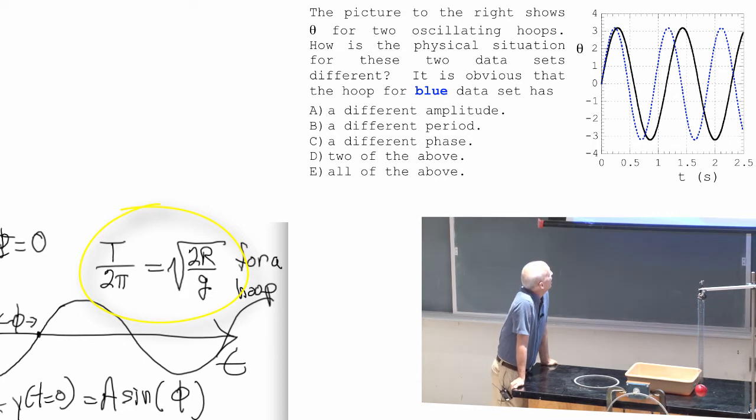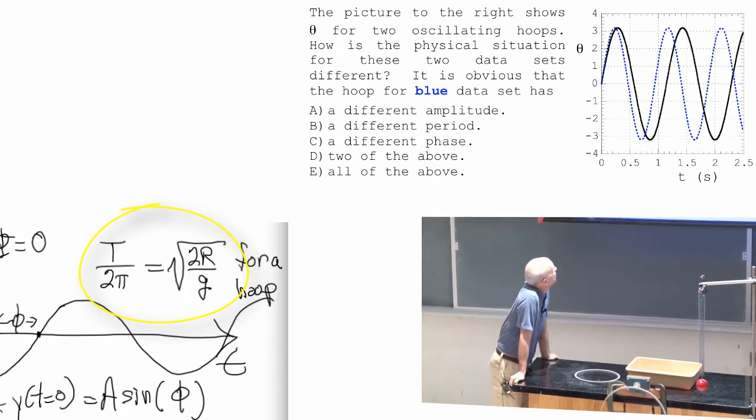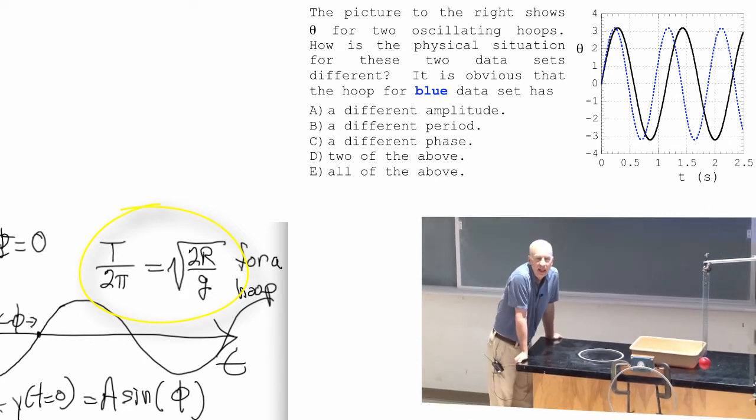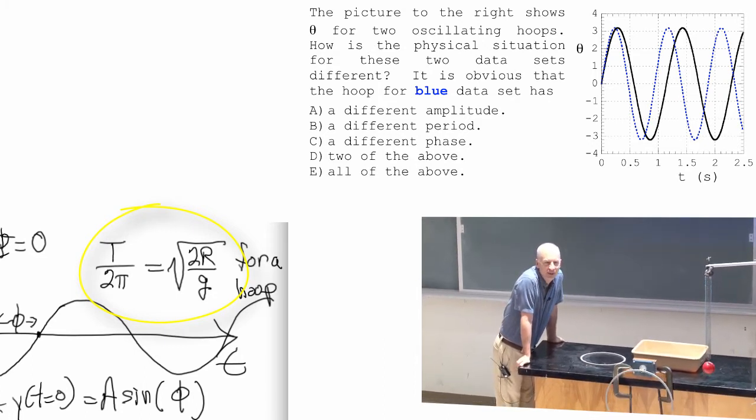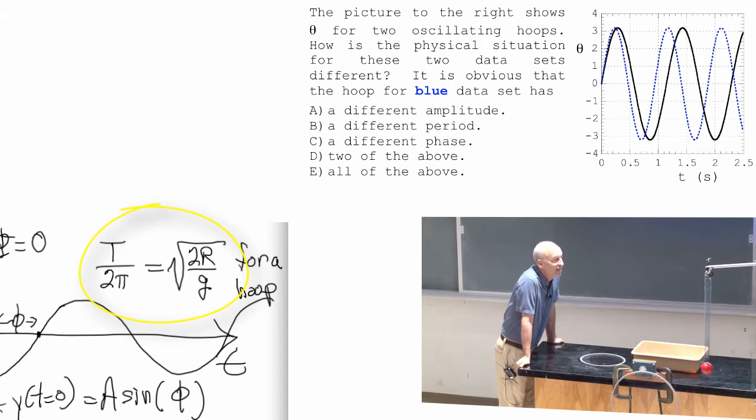T over 2π, the period over 2π is 2π r over g. Is it possible for g to change? No, not unless the Earth changes in some way.